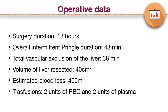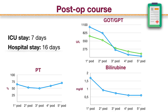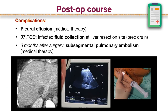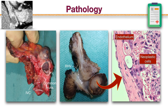Surgery duration was 13 hours with 38 minutes of vascular exclusion, and extracorporeal circulation was not required. The postoperative course was regular and the patient was discharged 16 days after surgery. During follow-up, complications included pleural effusion controlled with medical therapy, infected fluid collection at resection sites requiring percutaneous drainage, and subsegmental pulmonary embolism treated with medical therapy. Resection margins were free and the metastasis originated from the caval wall, infiltrating surrounding tissues and diaphragm.